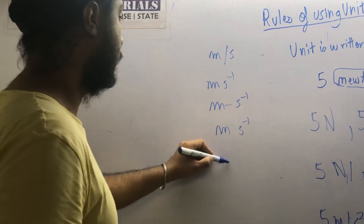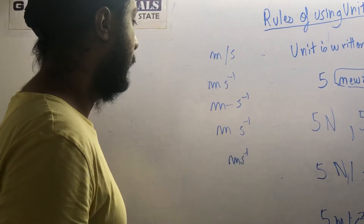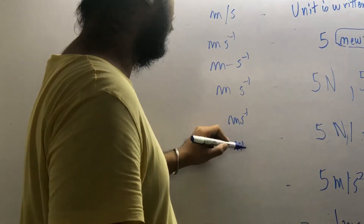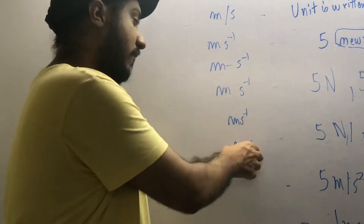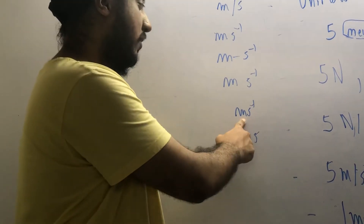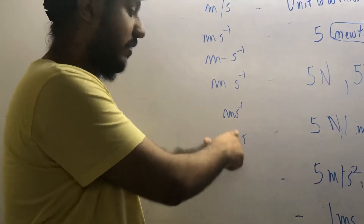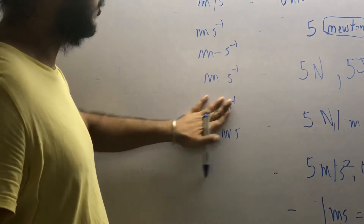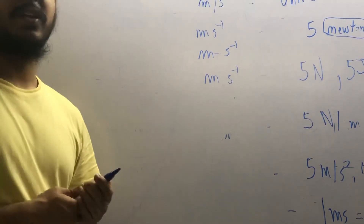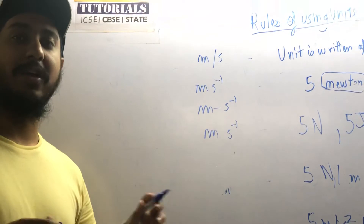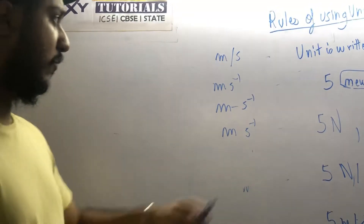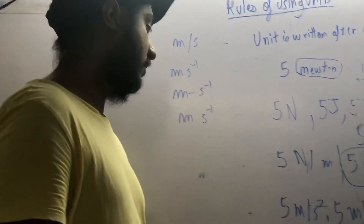Never write it as 'msecond inverse' without a space, because some people confuse it with millisecond. Since 'm' and 'second' are very close, it can be misread as millisecond instead of meter per second. So always keep a distance when showing units in multiplication form.